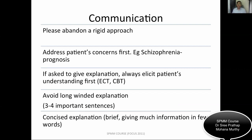In communication stations, the role player may have four or five specific questions to ask. For example, a mother whose son has schizophrenia may be keen to know about prognosis first — so address their questions first, then cover the areas you wanted to cover. If you are asked to give an explanation, always elicit the patient's understanding first. Ask what they already know about ECT or CBT, then fill in the gaps. That makes for a good interview style.